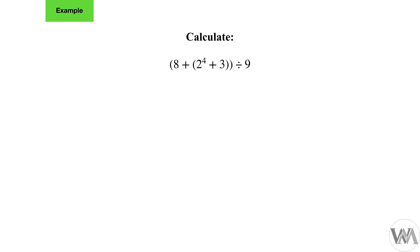We're still going to apply the order of operations, which says we have to do brackets first. But now we have a nested bracket, so we are going to do the nested bracket first. Inside that nested bracket we have an exponent, and we need to first expand that exponent in order to calculate the nested bracket.